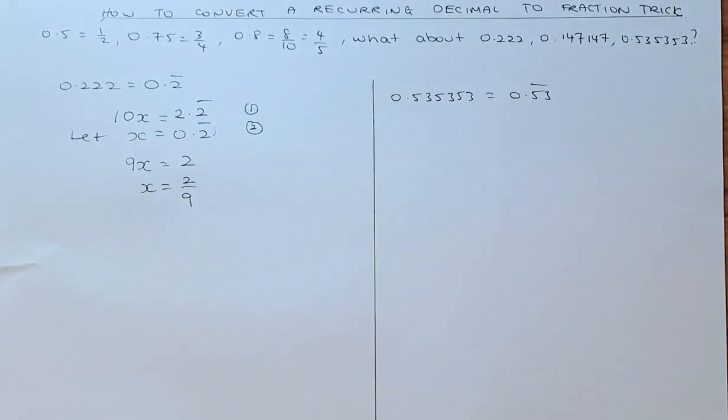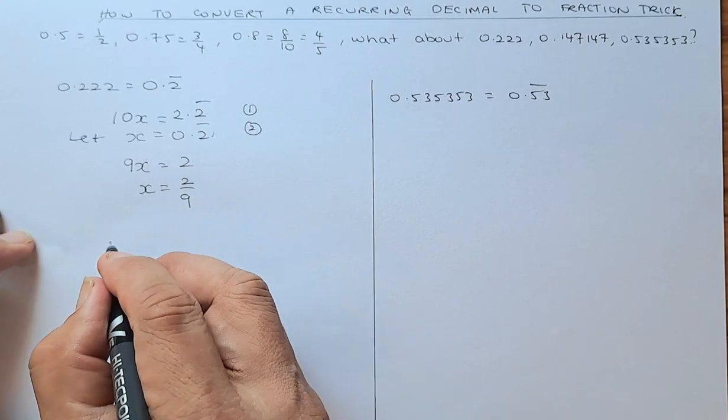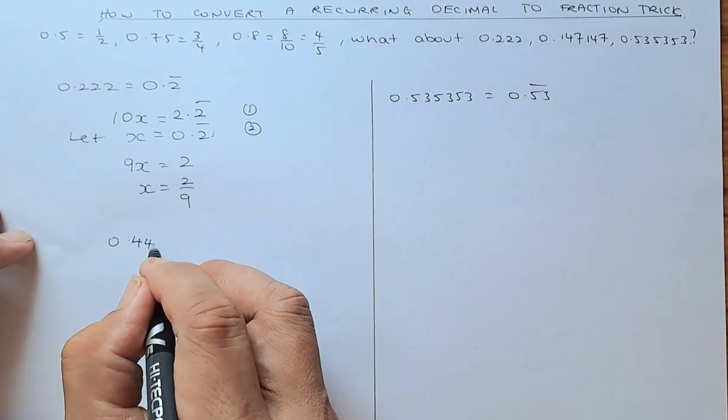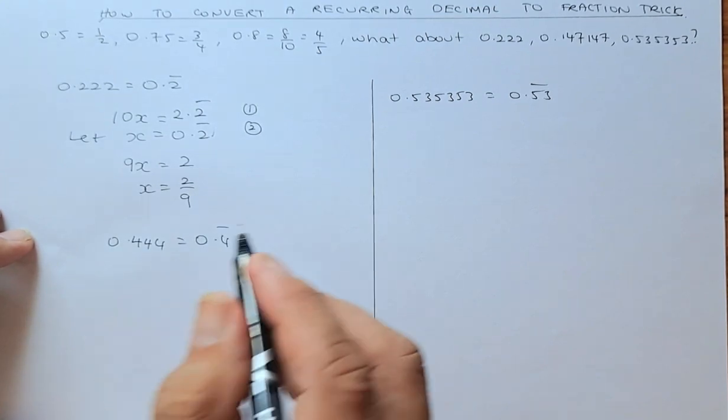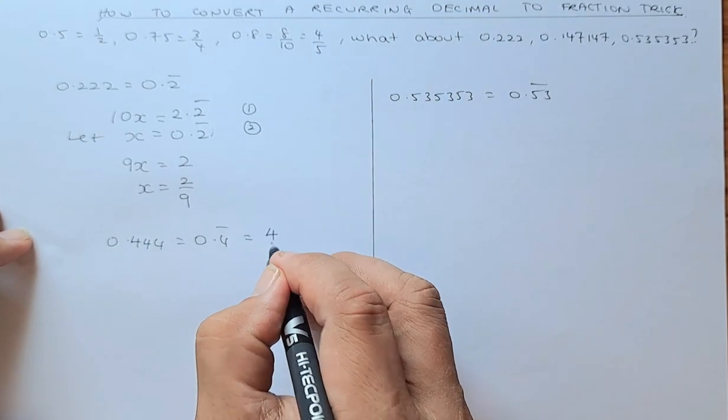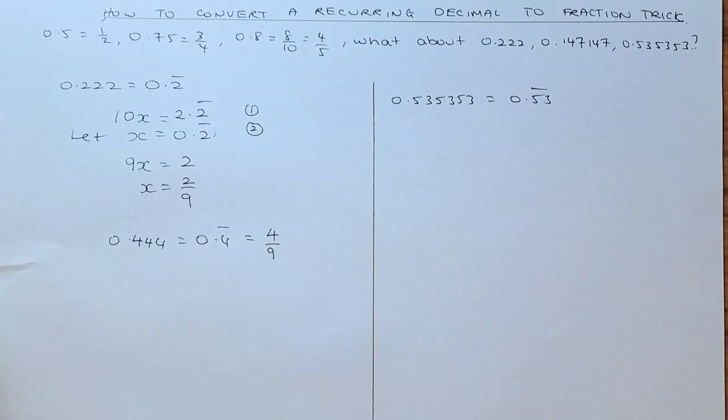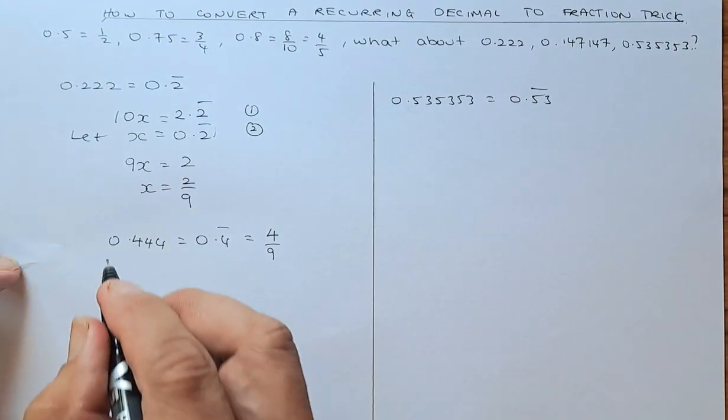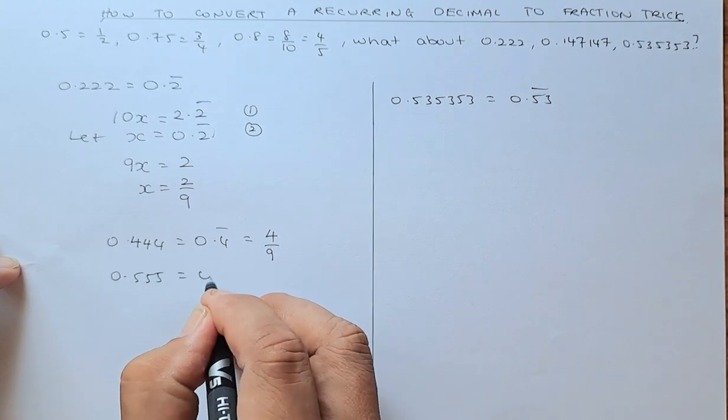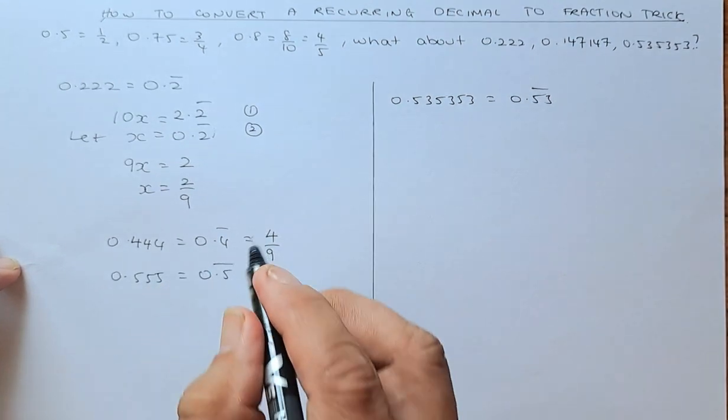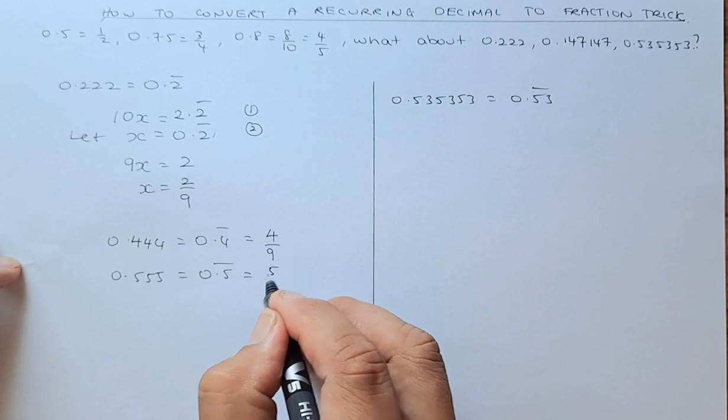So similarly, if you have any number like 0.444 recurring, or written as 0.4 recurring, to convert them to fractions is just 4 over 9. Similarly, if I have 0.555, that is written as 0.5 recurring, and the fraction is going to be 5 over 9.